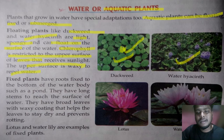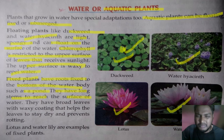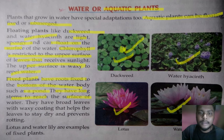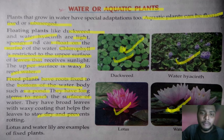The upper surface of floating plant leaves is waxy, so water dropped on the leaves will not be absorbed. Fixed plants have roots fixed to the bottom of the water body such as a pond, and have a long stem to reach the surface. Examples include the lily and lotus. Their roots remain at the ground under the water, the leaves are on the water surface, and there is a wax coating on the leaves. Examples of these plants include the lotus and water lily.